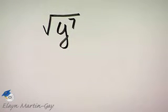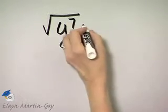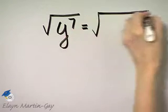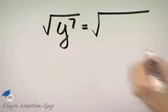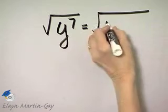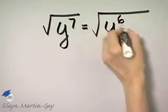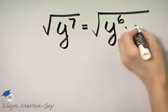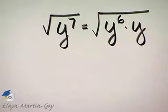Let's simplify the square root of y to the 7th, and remember we're assuming that y represents a positive number. So we need to write this, the y to the 7th, as the product of a perfect square, which is y to the 6th, times y.